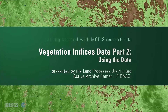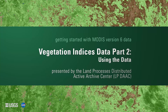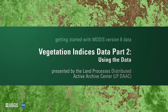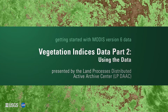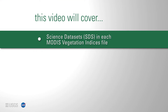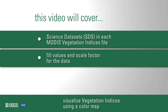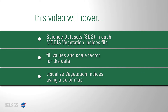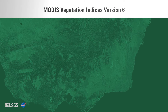Getting started with MODIS version 6 vegetation indices data, part 2, using the data presented by the Land Processes Distributed Active Archive Center, or LP DAAC. This is part 2 of the getting started with MODIS version 6 vegetation indices data video series. This video will cover the science datasets or SDSs in each MODIS vegetation indices file, the fill values and scale factor for the data and how to apply it, how to visualize vegetation indices using a color map, and how to find vegetation indices resources on the LP DAAC website.